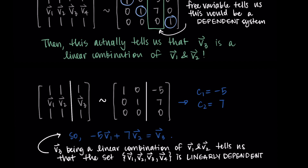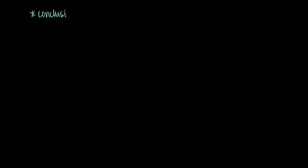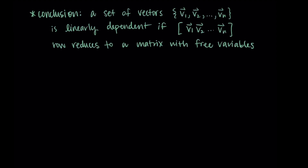Instead of needing to check every single vector to see if it's a linear combination of the others, we can just put them in a matrix and row reduce and see if there are any free variables. Those free variables tell us it's a dependent system and that the vectors are linearly dependent. More formally, a set of vectors v1 through vn is linearly dependent if the matrix with each vector as a column row reduces to a matrix with free variables — meaning fewer than n pivot positions.